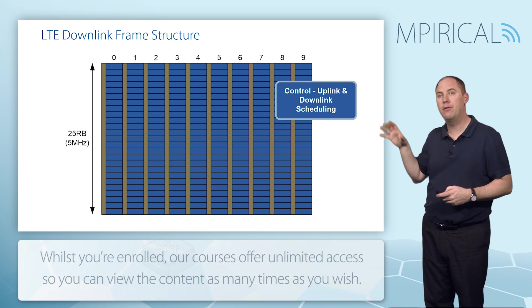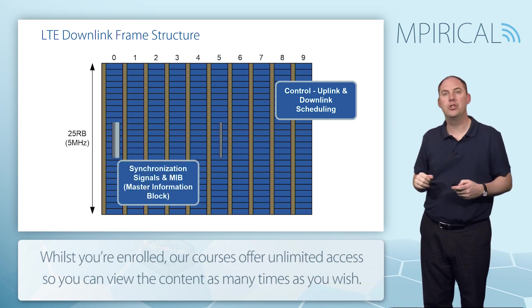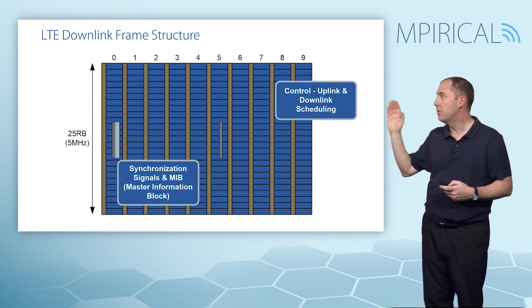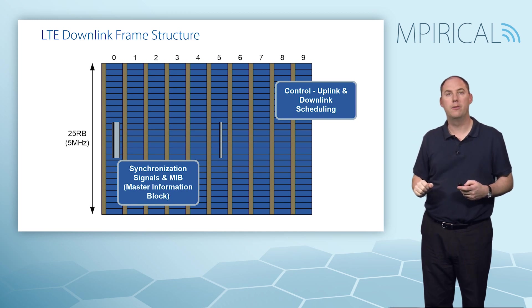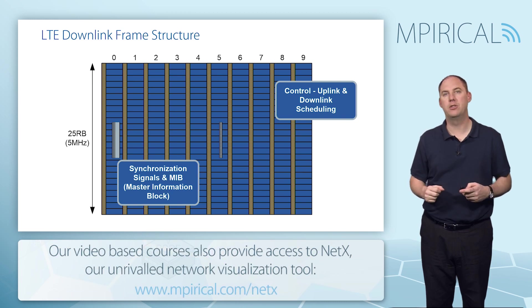In the downlink frame structure, we'd also expect to find some synchronization. Specifically, the primary and secondary synchronization occurs in sub-frame 0 and sub-frame 5. In addition, in sub-frame 0, we'll find the MIB, the master information block, with some basic system information message being sent down towards the users in the cell.